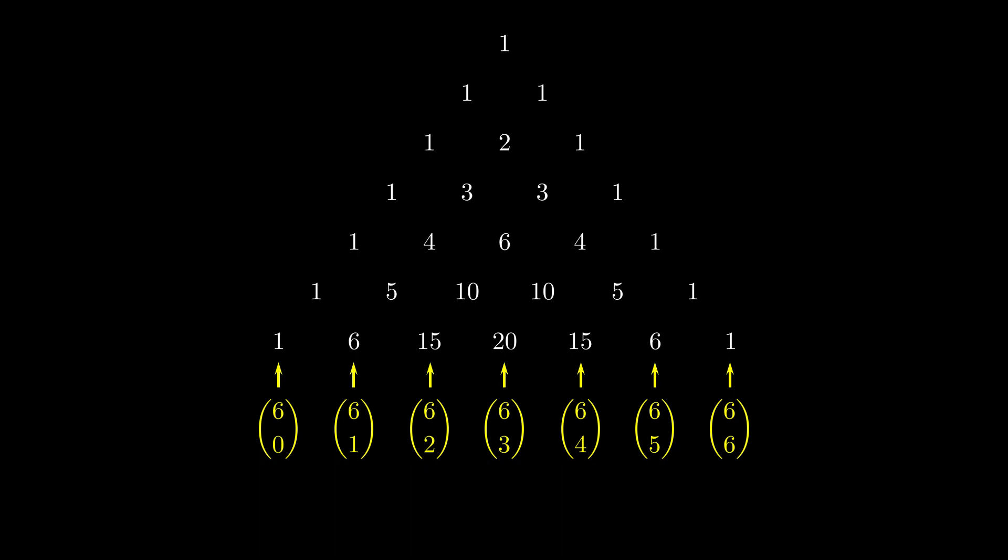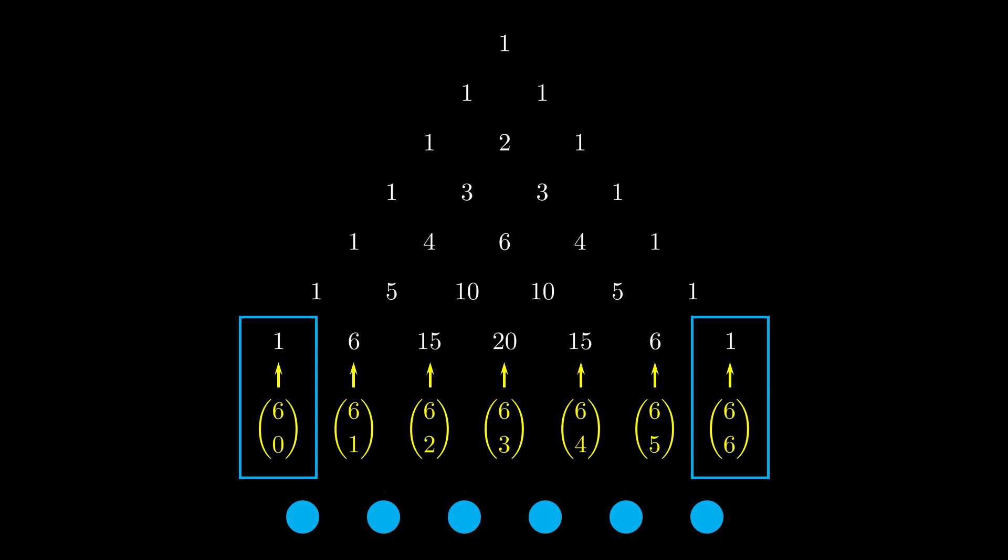But I think there are a few things that should be quite immediately obvious to us. Firstly, the fact that 6 choose 0 and 6 choose 6 both equal 1. Or in fact, anything choose 0 and anything choose itself must equal 1. That should be obvious, because given 6 objects, there's only one way to choose nothing, which is to do nothing, and there's only one way to choose all of them, which is to choose all of them. So the ends are always equal to 1.